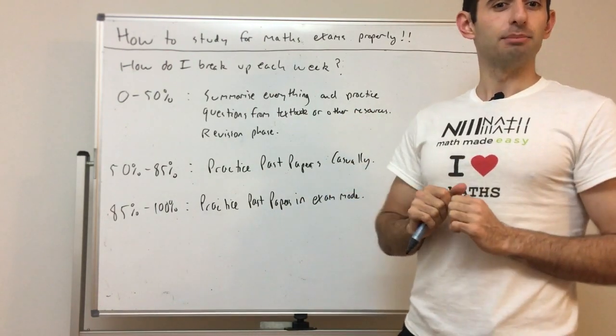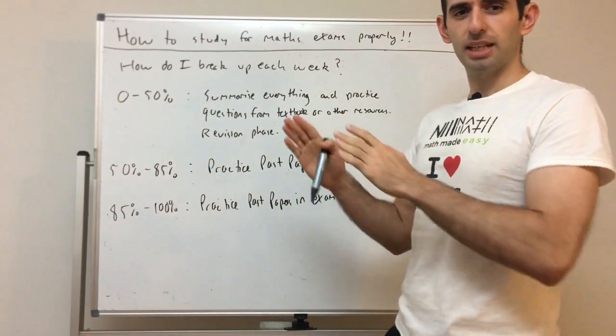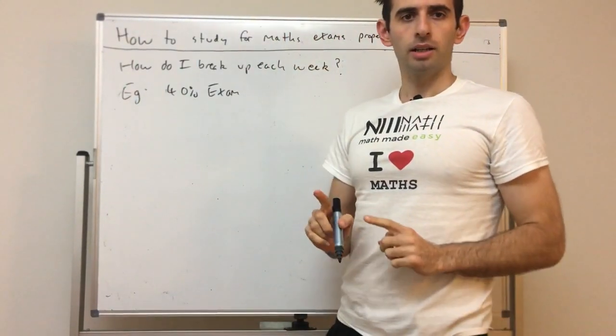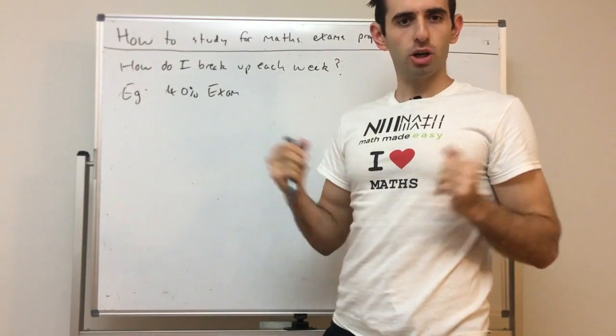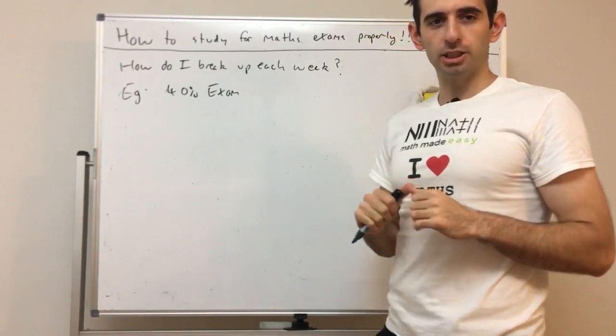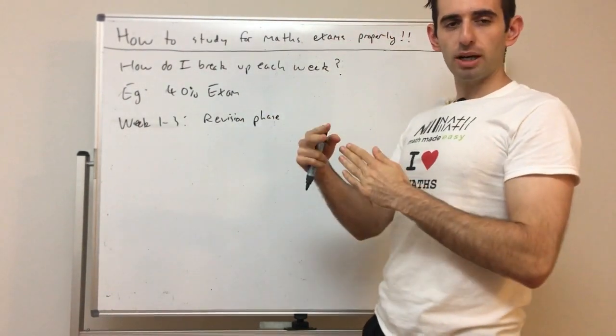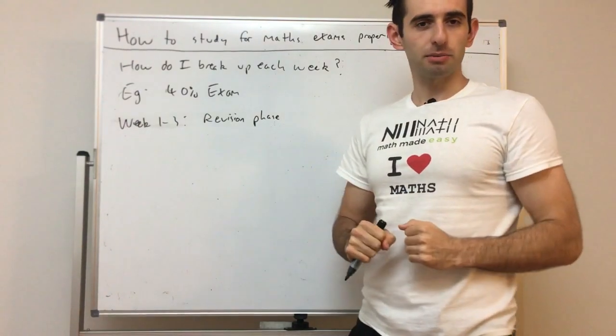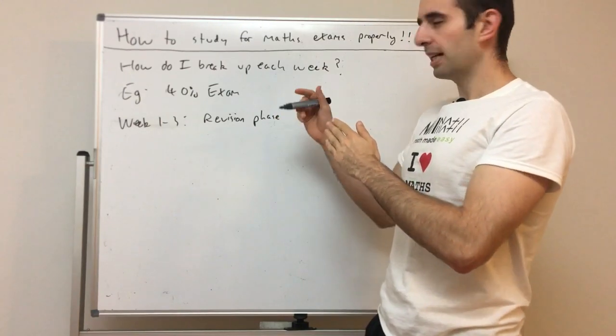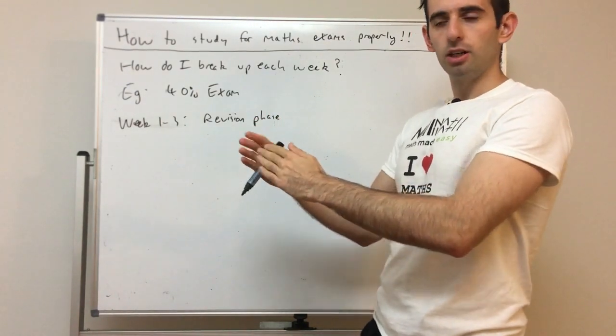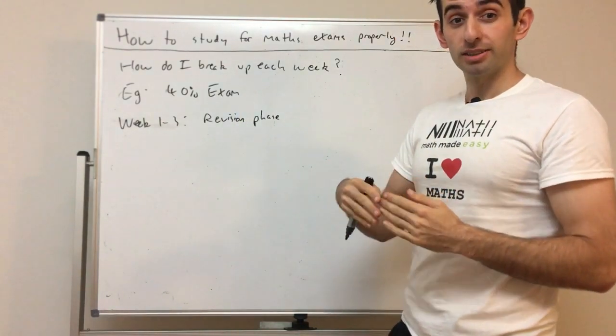Let's look at a basic coverage week by week for a mid-range exam. Say we have a 40% exam - that's what I said most trials are worth in New South Wales for HSC. Week one through three: revision phase. Summarize everything, practice all those questions from the textbook and other resources. If we're doing a 40% exam, I'd say we need at least six weeks, so that first three should be on revision at least. It can be less if you're really competent because we want to get to the next phase as quickly as possible.